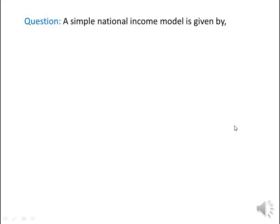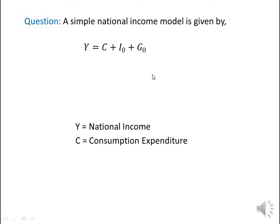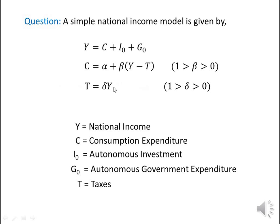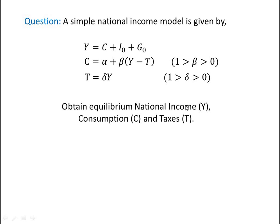In a simple national income model, y equals c plus i0 plus z0, where y is national income, c is consumption expenditure, i0 is autonomous investment, and z0 is autonomous government expenditure. The consumption function is c equals alpha plus beta times (y minus t), where beta lies between 0 and 1, and t is taxes. Taxes are given by t equals delta times y, where delta lies between 0 and 1.